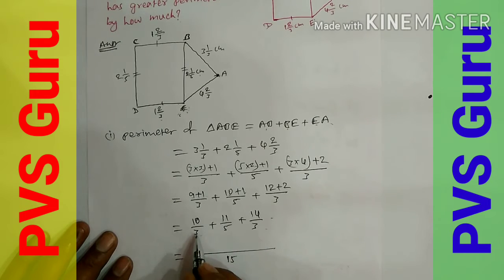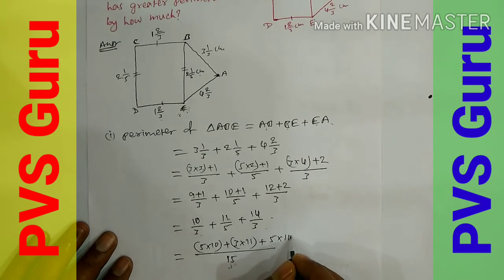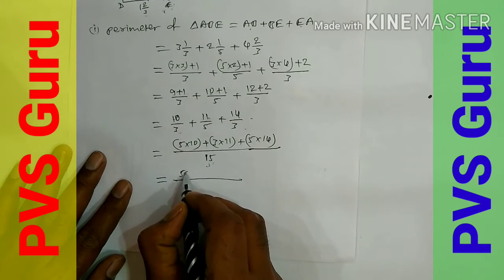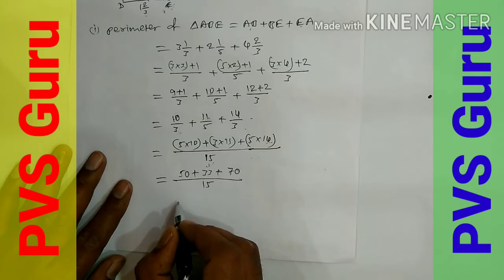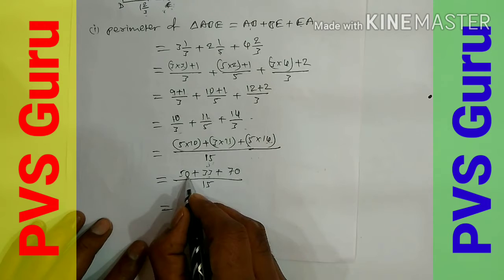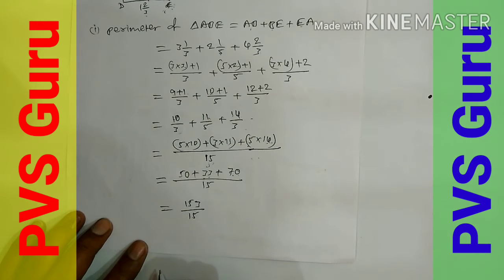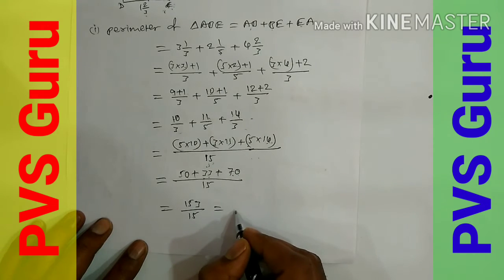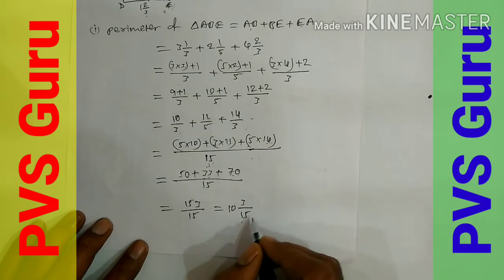With LCM = 15: (5×10 + 3×11 + 5×14) / 15 = (50 + 33 + 70) / 15 = 153/15. Converting to mixed fraction: 15 goes into 153 ten times with remainder 3, so the perimeter of triangle ABE is 153/15 cm.